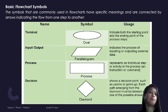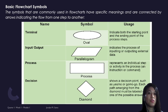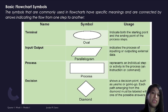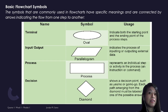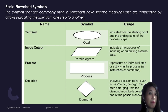Then we have the decision box, which is the diamond shape. It is used to answer a question with yes or no. If the condition is true or yes, it will go in one direction; if the condition is false or no, it goes another way. For example, to identify which is greater — A or B, where A is five and B is seven — we ask: is A greater than B? Yes or no?